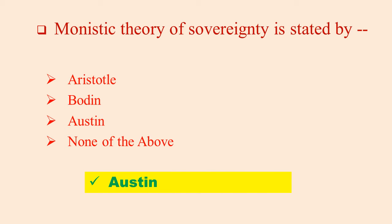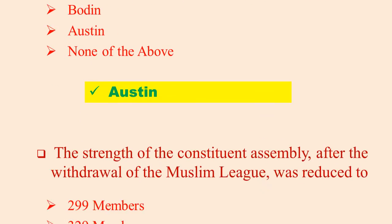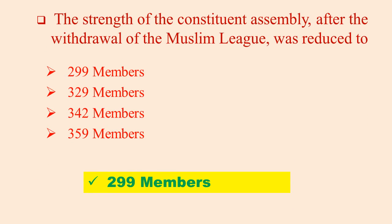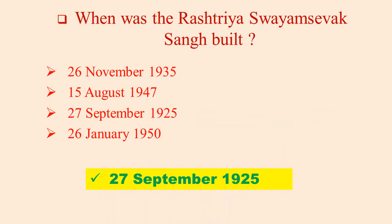In which list of the Indian Constitution is citizenship included? Union List. The strength of the Constituent Assembly after the withdrawal of the Muslim League was reduced to 299 members. When was the Rashtriya Swamsevak Sangh built? 27 September 1925.